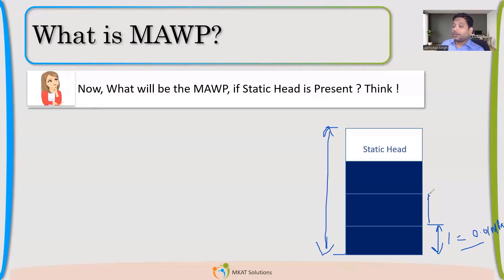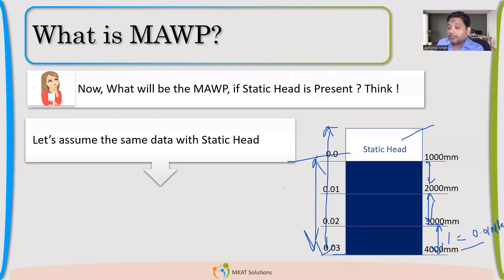So roughly 0.01 MPa each segment will create — same for each lower segment. In the top segment there is no liquid, so liquid is there only up to 3 meters height. If we add all the static head: the first segment has 0.01 MPa static head.